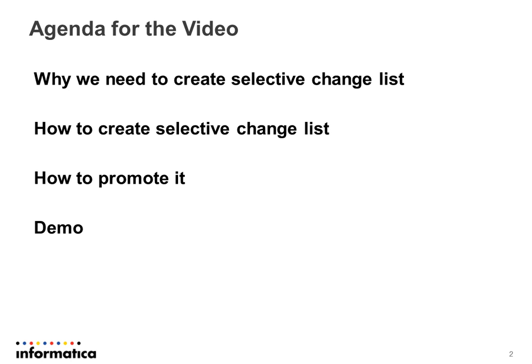Why do we need to create selective changes? Let's assume that in one of the environments you created some extra objects — for example, one extra column is added to your base object. Then you need to promote only that extra column across all the environments, say QA, SOTE, and production. In that case we need to create a selective change list.